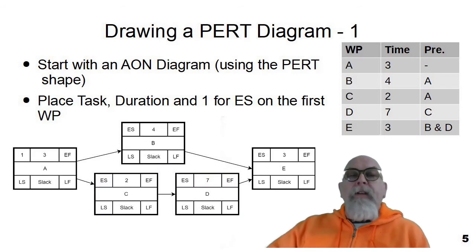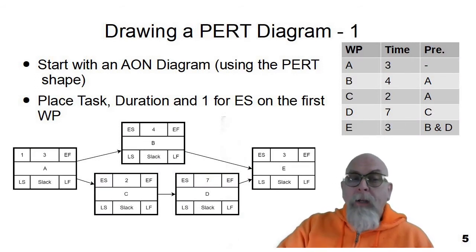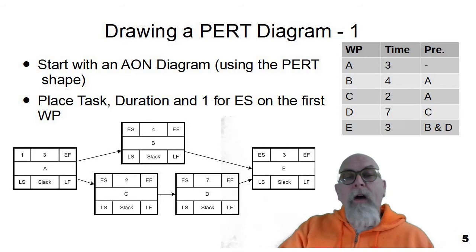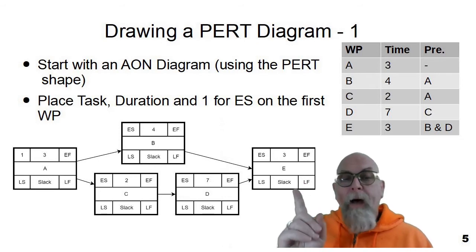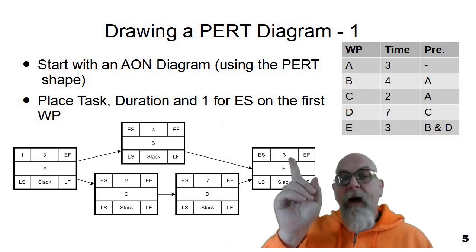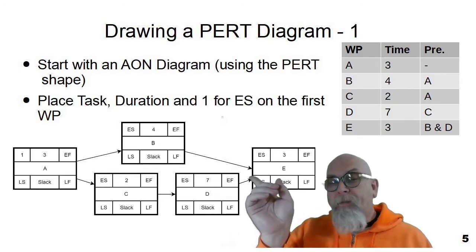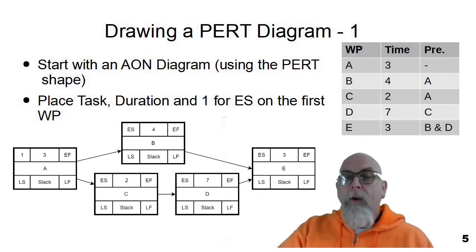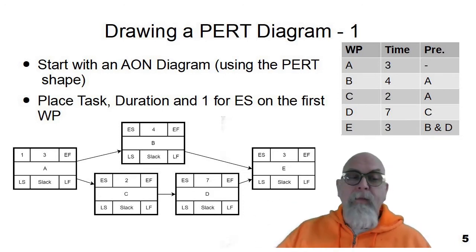So the first step in drawing a PERT diagram is to basically draw an activity on node diagram using the PERT shape, place the task name or task ID, the duration, and one for the early start on the first work package or work packages. So you can see that I put the box here, I put the task name, I put the duration, and on that very first one I put a one for early start. And now we'll go through a second pass to add more information.